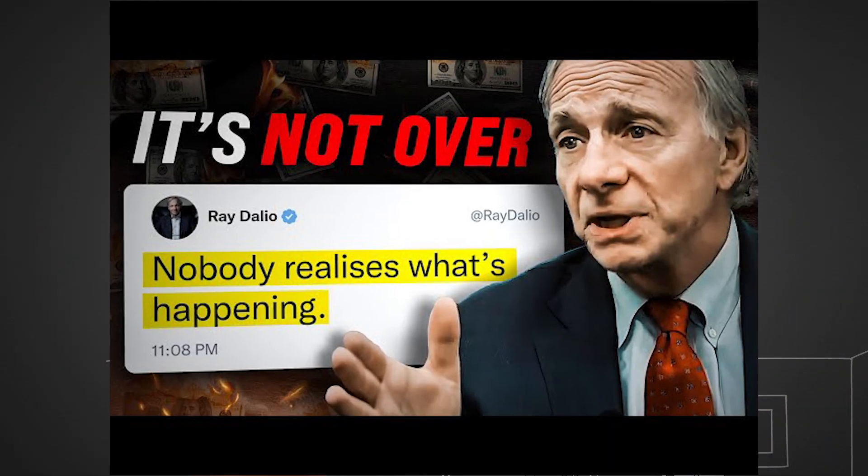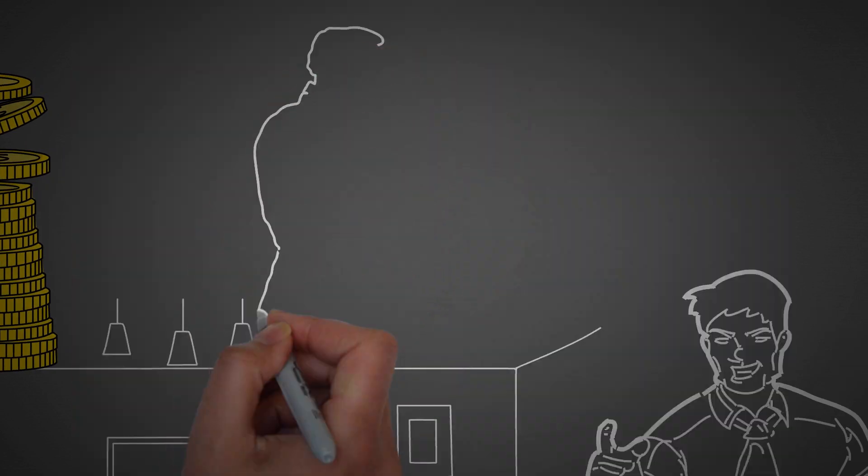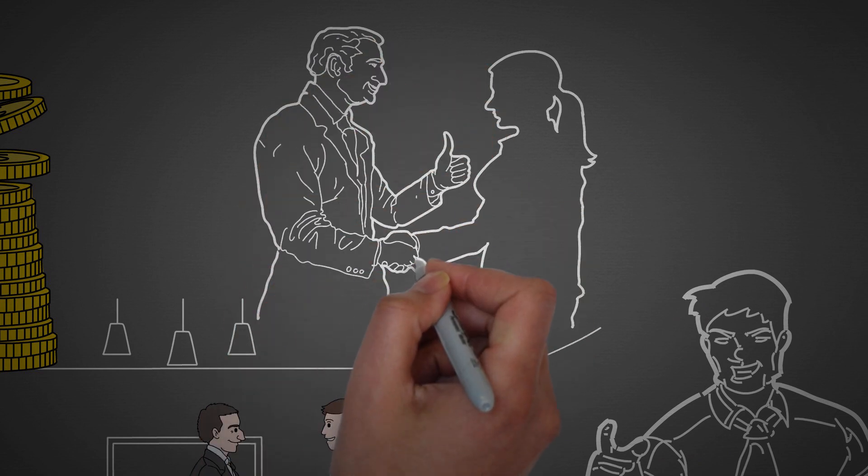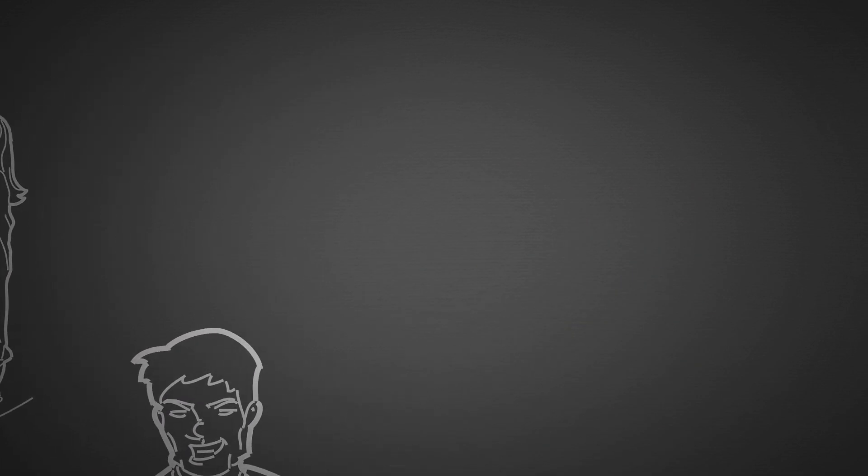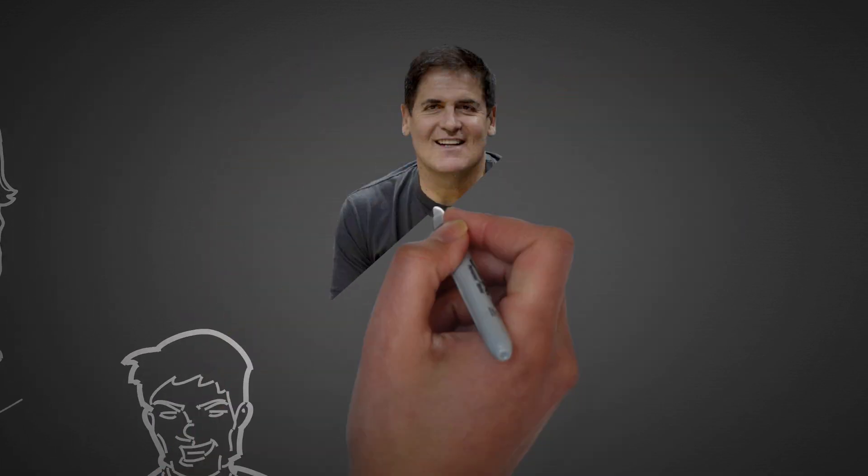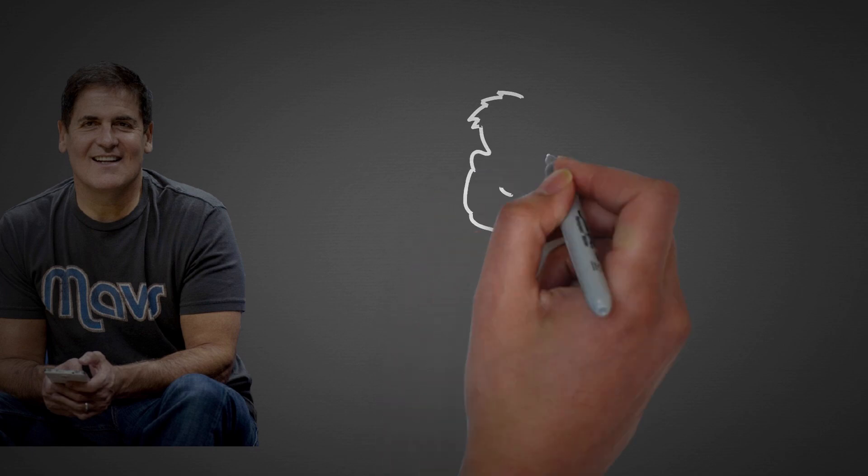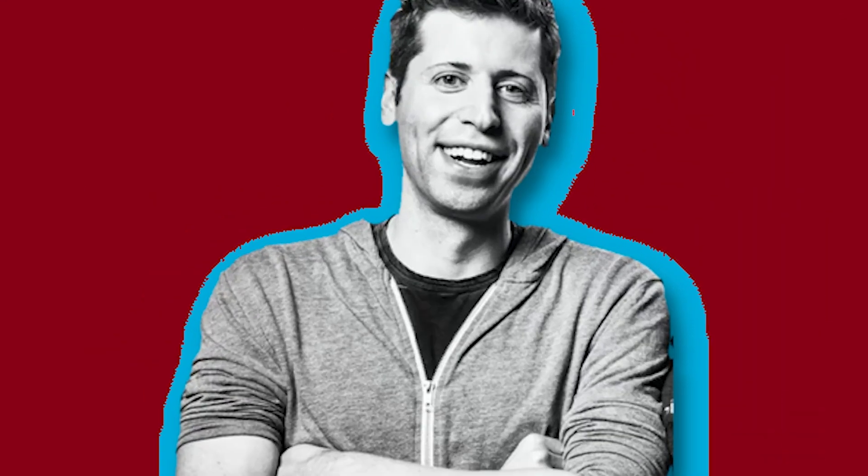With his unique insight into cutting-edge AI developments, Musk warned of the profound risks AI poses. He stated, AI is a fundamental risk to the existence of human civilization. It starkly contrasts other technological dangers we've faced, like car accidents or faulty drugs affecting individuals but not society. Musk's view elevates AI to a potential threat not just to individuals but to the very fabric of human society.